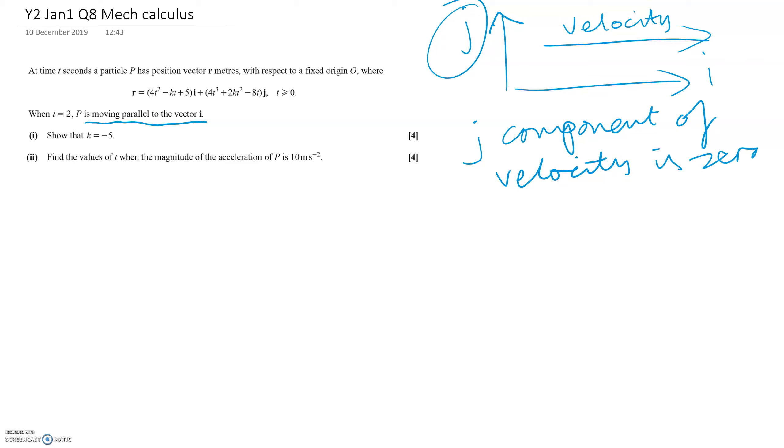Now we start off with a position vector. To get the velocity, we need to differentiate that. So the velocity will be the derivative of this equation: the I component is 8T minus K, and the J component is 12T² plus 4KT minus 8.